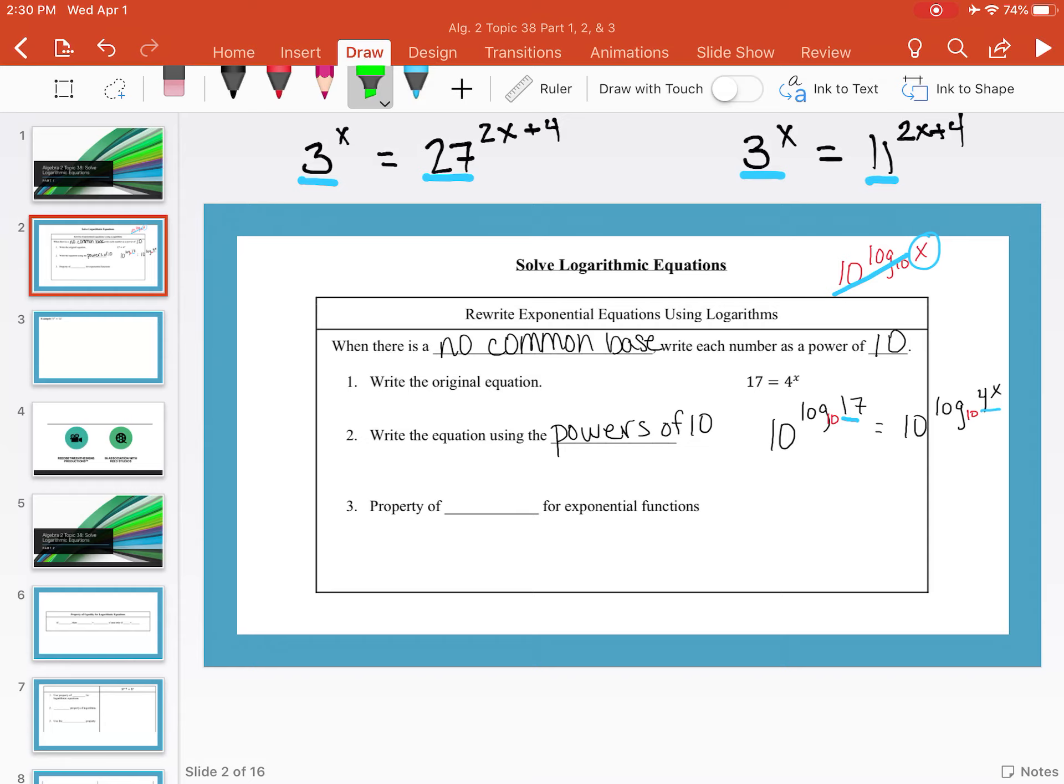Now we know that since they have the same base of 10 here, that's the same thing as setting their exponents equal. So we'd be left with log base 10 or just log of 17 equals log base 10 or log of 4 to the x. So this is called the property of equality for exponential functions.